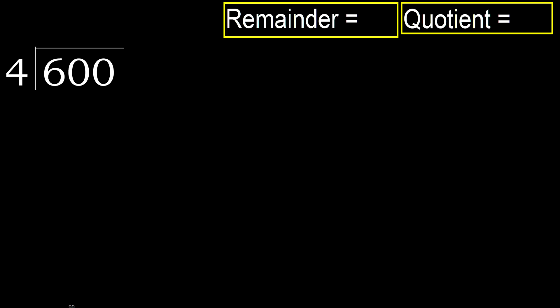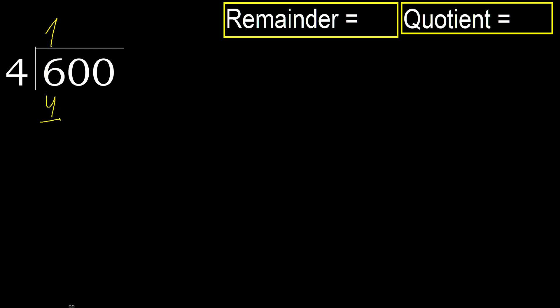600 divided by 4. 6 is not less, therefore with 6. 4 multiplied by which number is nearest to 6 but not greater? 4 multiplied by 2 is 8 — 8 is greater. Multiply by 1 is 4, it is not greater. 6 minus 4 is 2.